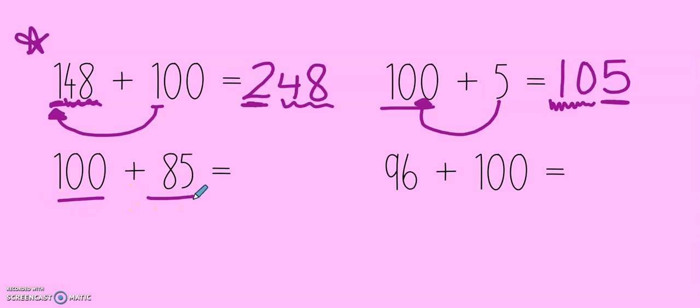100 plus 85. Hmm. That kind of sounds a little bit like expanded form, doesn't it? I wonder if I could move both the 8 and the 5 over because there are two 0s. Since there's two 0s, I can just move both of these numbers right on over. 100, 80, 5. I got to keep my 100 and I just moved the 85.